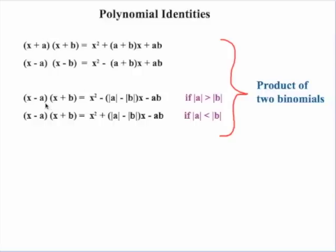We also have situations where the two binomials have different signs. So we have x minus a times x plus b. If the absolute value of a is more than the absolute value of b, the result will be x squared minus the difference of the absolute values of a and b as our coefficient of x, minus ab as our constant. And if the absolute value of a is less than b, we get x squared plus the difference of the absolute values of a and b times x, minus ab.